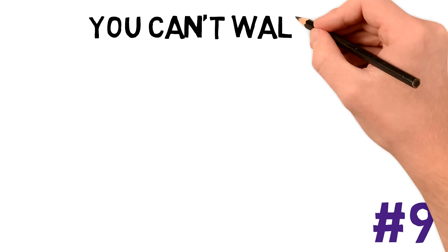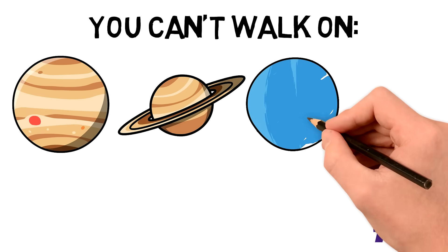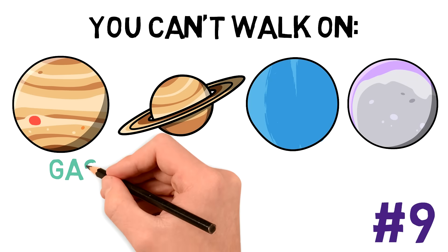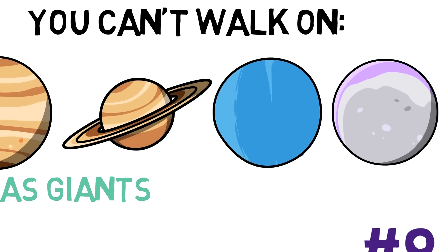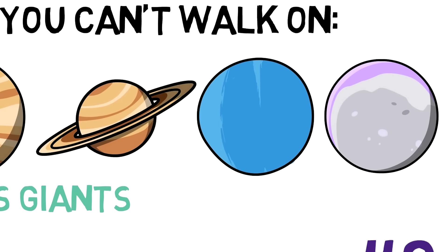Number 10. You cannot walk on Jupiter, Saturn, Uranus, or Neptune. In the solar system, only Mercury, Venus, Earth, and Mars have solid surfaces. Jupiter and Saturn are gas giants. That reminds me of someone. Neptune and Uranus aren't exactly gas planets, but their surface isn't solid either, other than maybe their core.